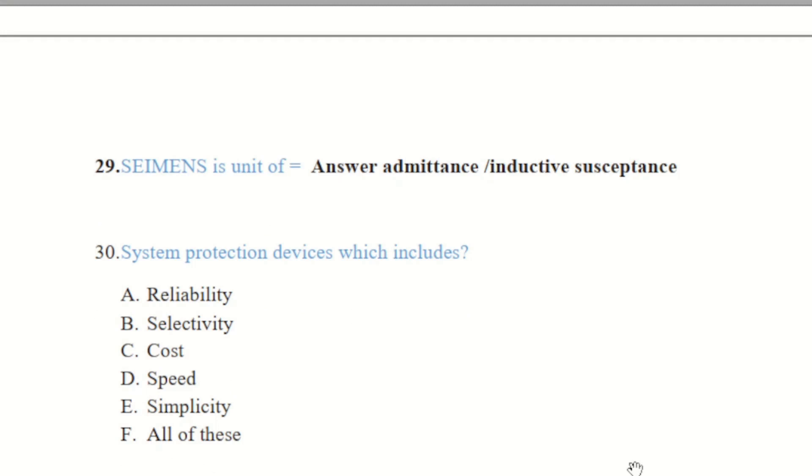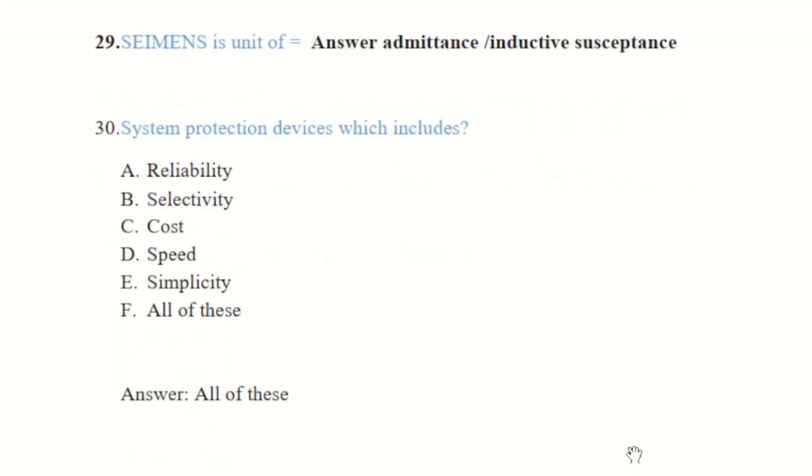Question number 30 is asking about the system protection device which includes reliability, stability, selectivity, cost, speed, simplicity, all of the above. The answer is all of the above.